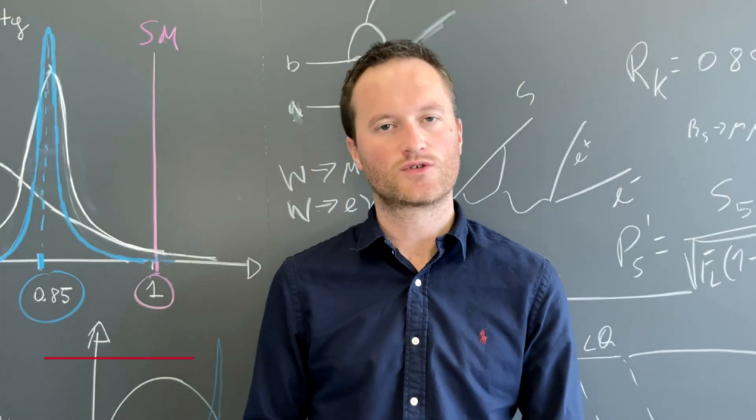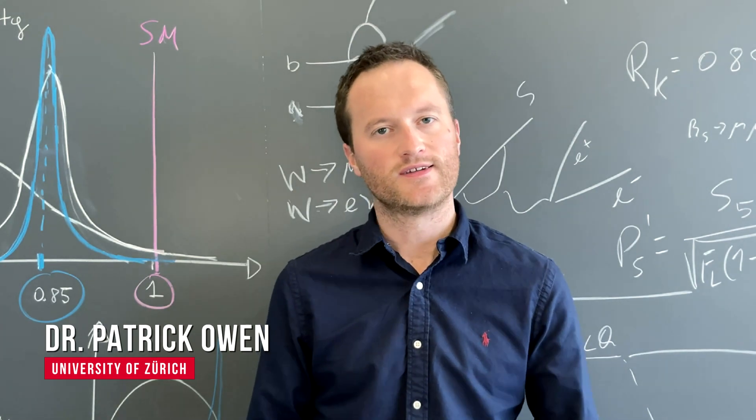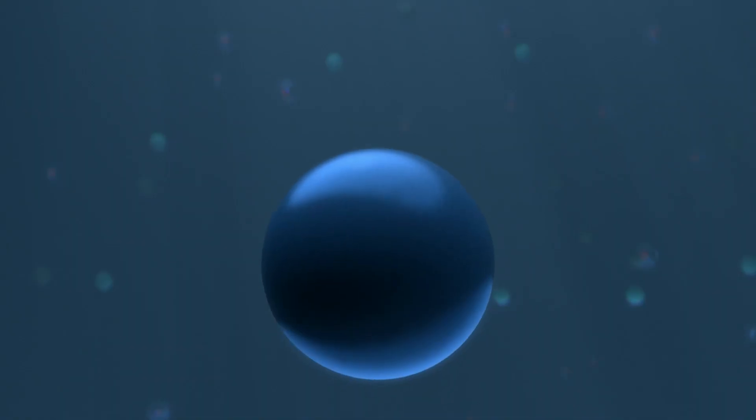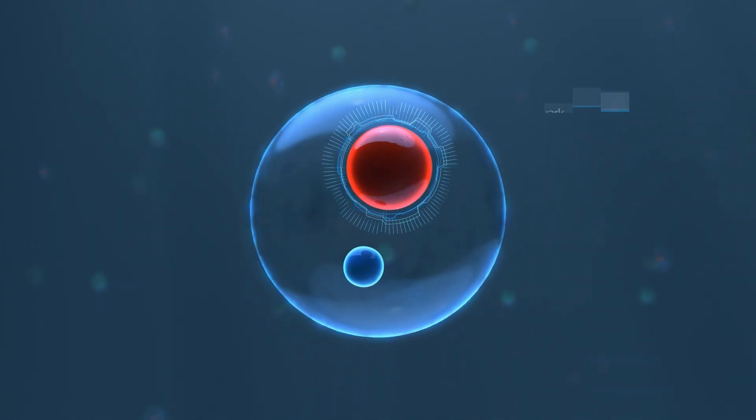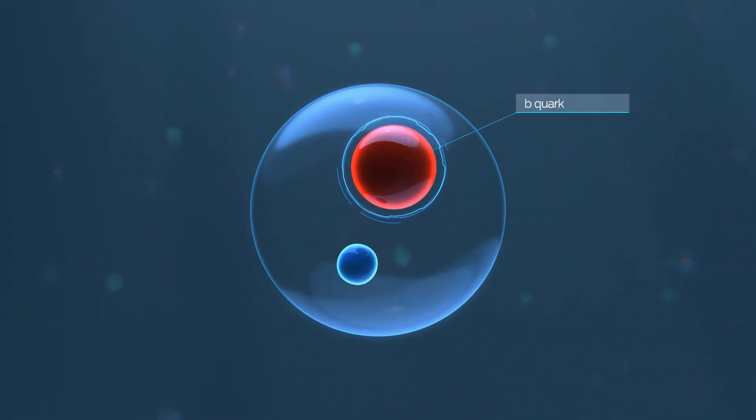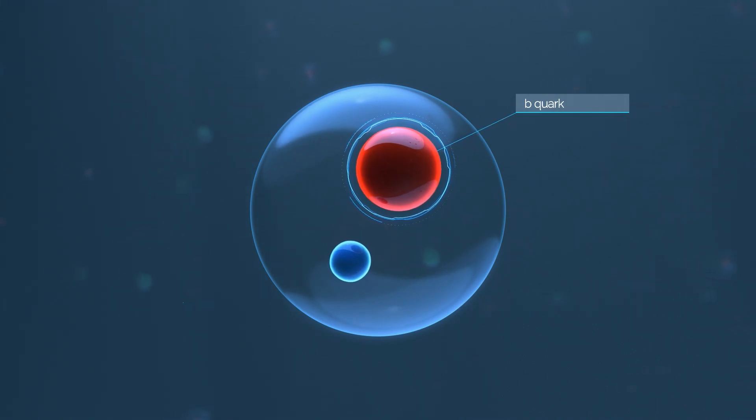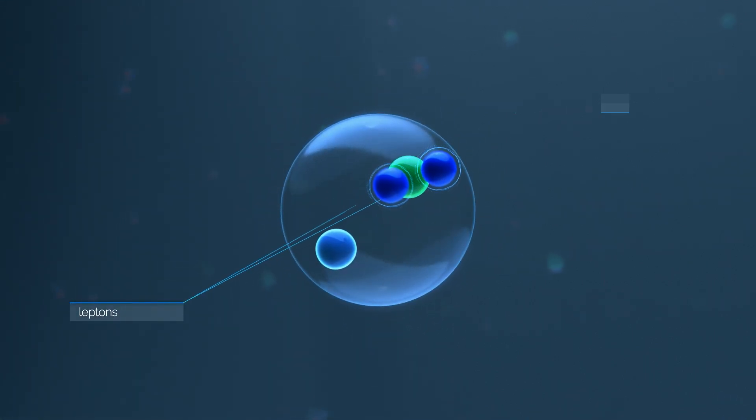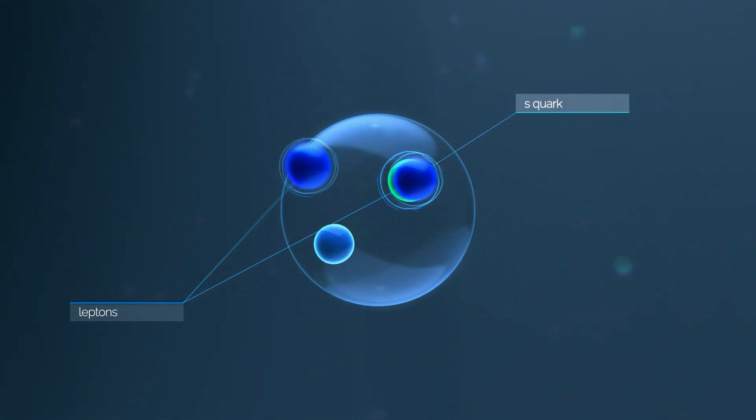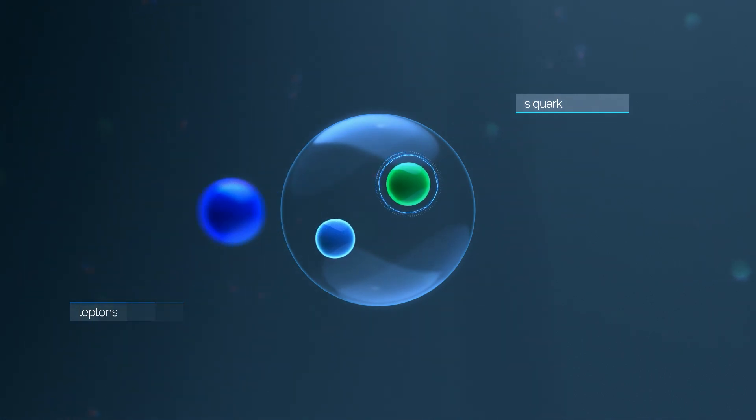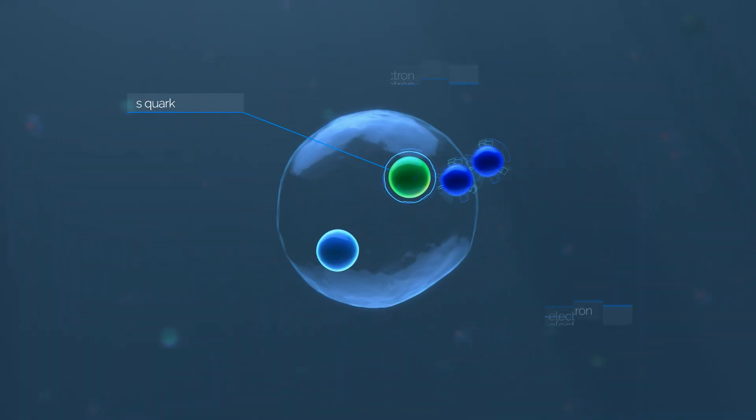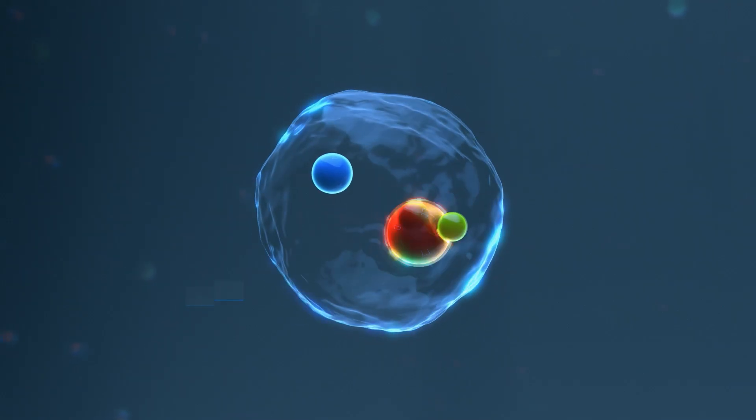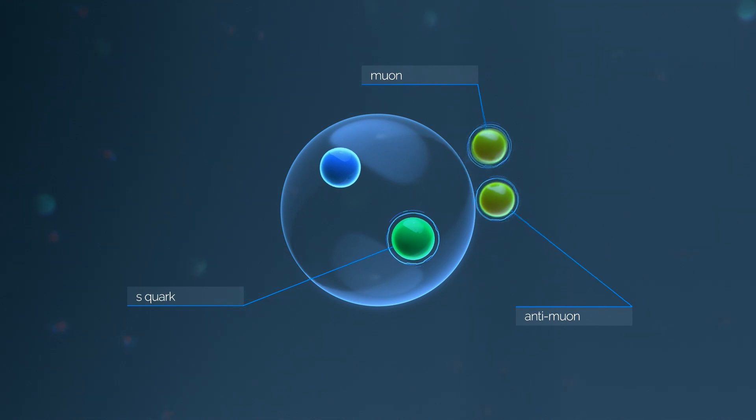We were looking at particles called B mesons, containing elementary particles called B quarks. These B quarks are not stable particles. They decay, transforming themselves into other particles. In this case, into S quarks and a pair of particles called leptons. These lepton pairs can be of different kinds. We are interested in one kind formed by one electron and one anti-electron, and in another kind formed by a muon and an anti-muon.